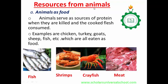Resources from animals — the raw materials and useful things you can get from animals. Firstly, animals can be used as food. Animals serve as sources of protein when they are killed and the cooked flesh consumed. If you kill a goat, it serves as protein. The flesh will be consumed — the flesh is meat.